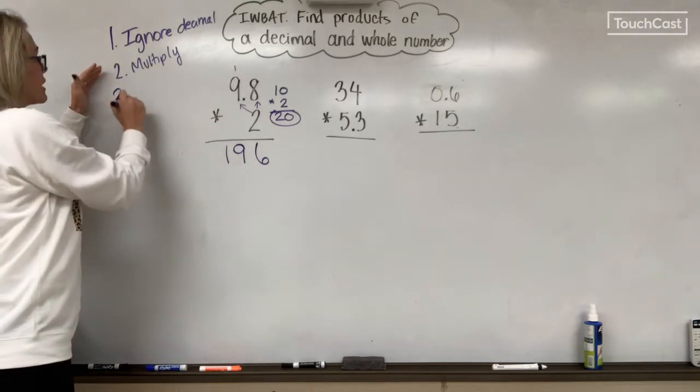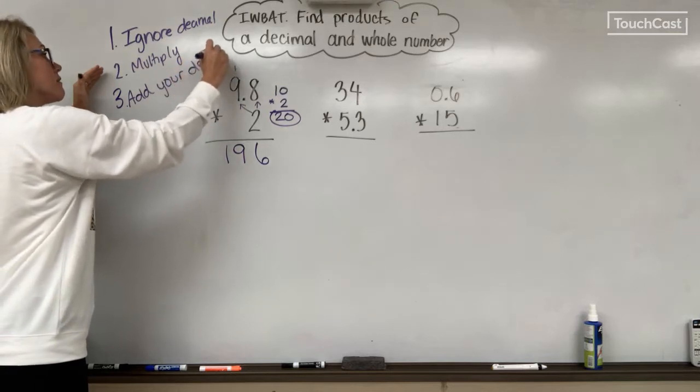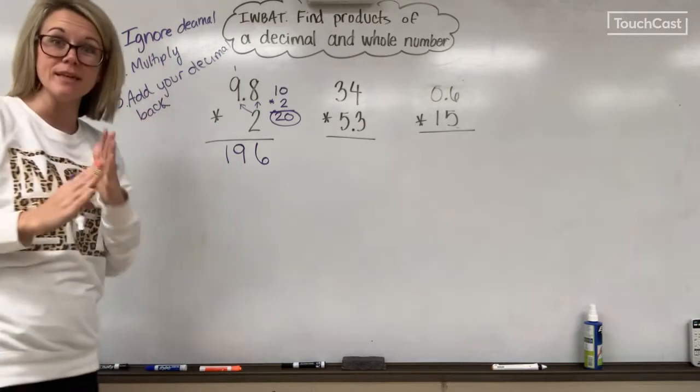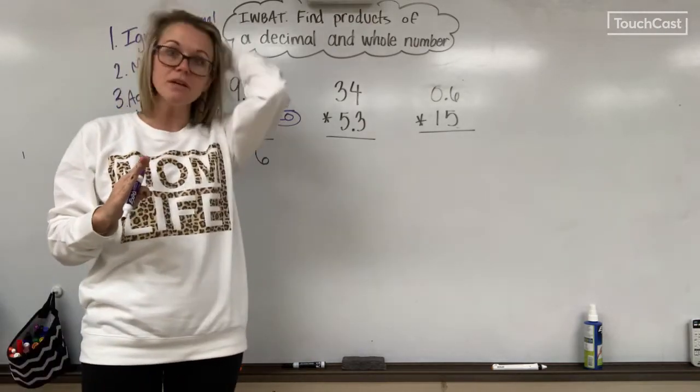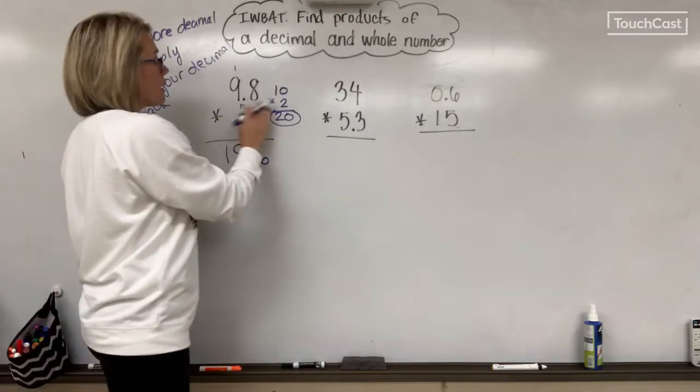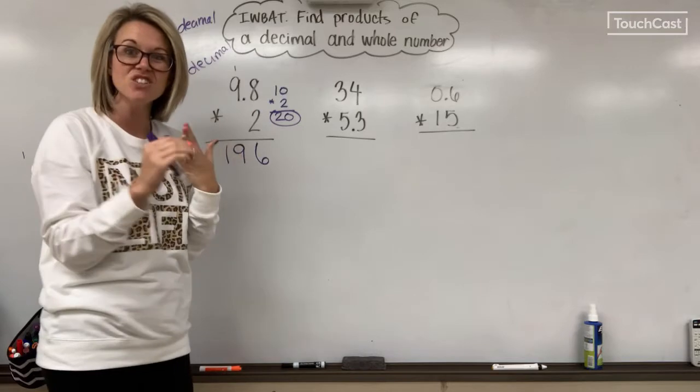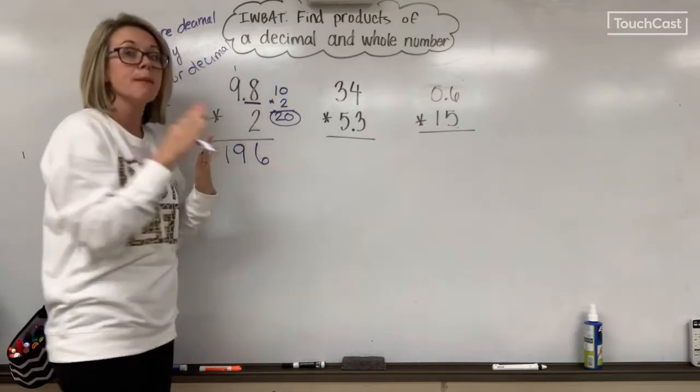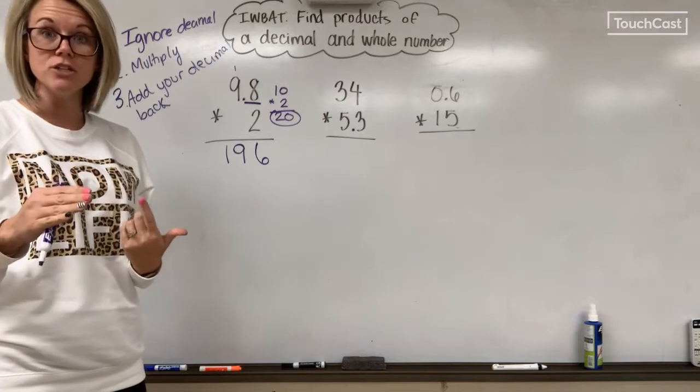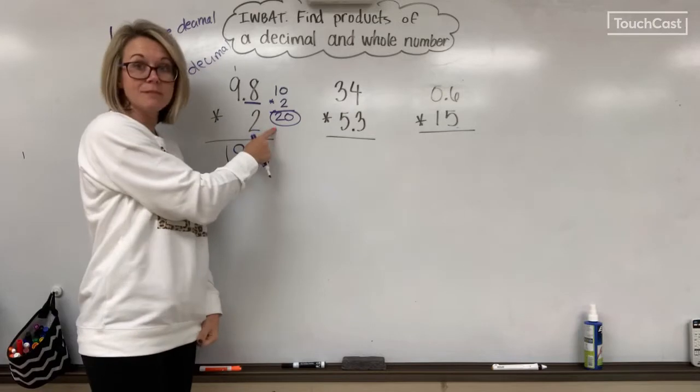We've got a couple of ways that we can figure this out. What we noticed the other day when we were doing models was that whenever one of my factors ended in the tenths place, my answer also ended in the tenths place. So I can use that strategy. Or I can say, well, I did my estimate. My answer needs to be close to 20.